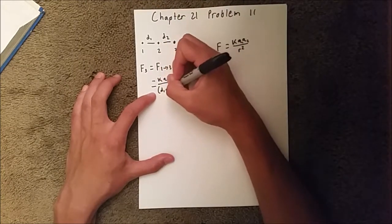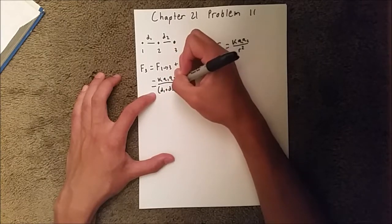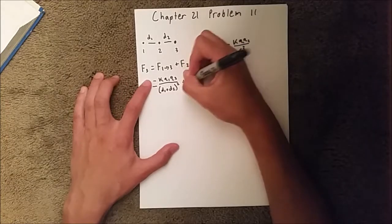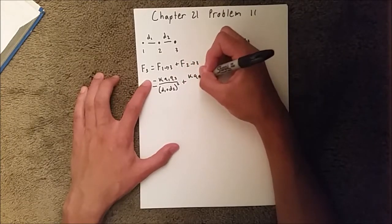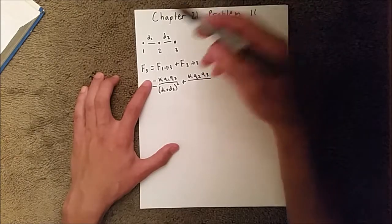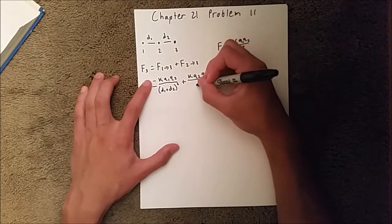And your K value is 1 over 4 pi epsilon sub zero. Now, let's go into two and square that quantity. And then, we have KQQ over this distance here which is D squared.